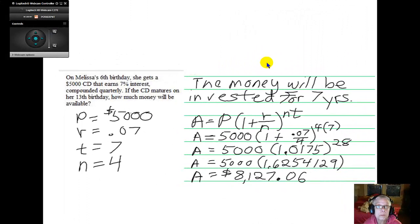This is problem number 26 on your homework. On Melissa's sixth birthday, she gets a $5,000 CD that earns 7% interest compounded quarterly. Quarterly is four times per year. If the CD matures on her 13th birthday, how much money will be available? Well, for this problem, our P is going to be $5,000, R is still .07, T, now how many years is it going to be in the bank from her sixth birthday to her 13th birthday? So that will be 7 years. And n equals 4 for the number of compounding periods.